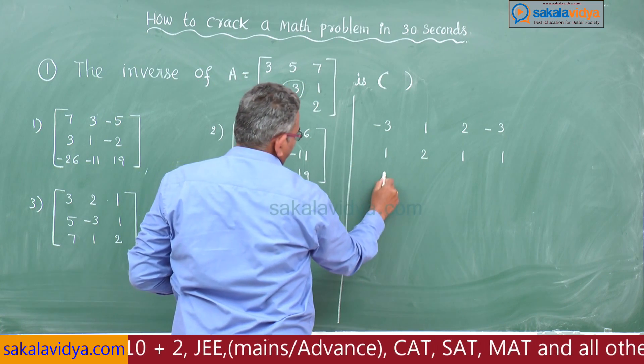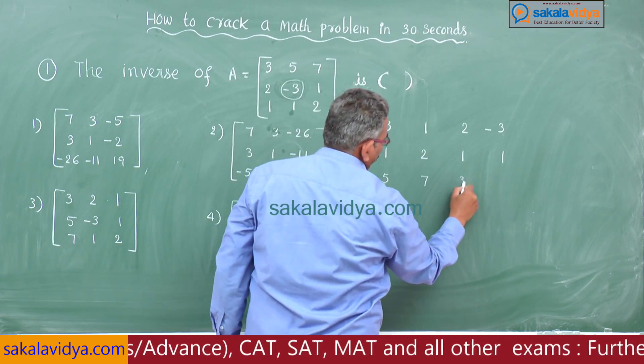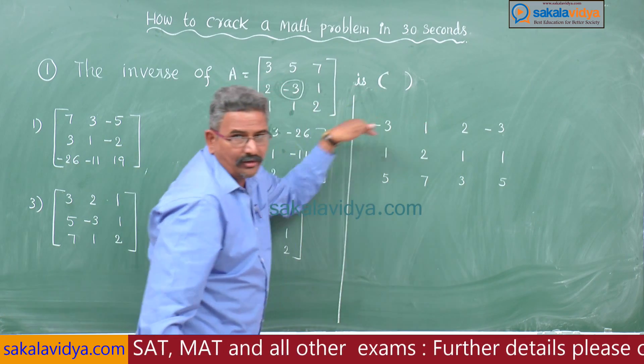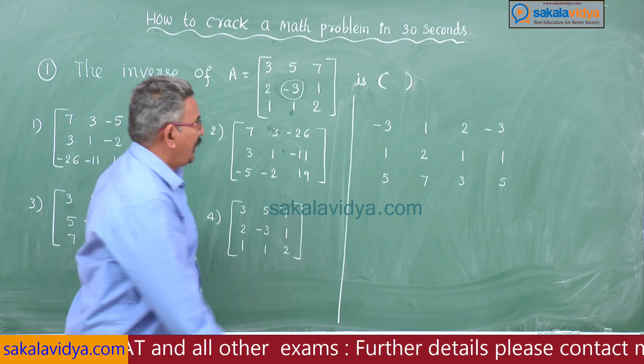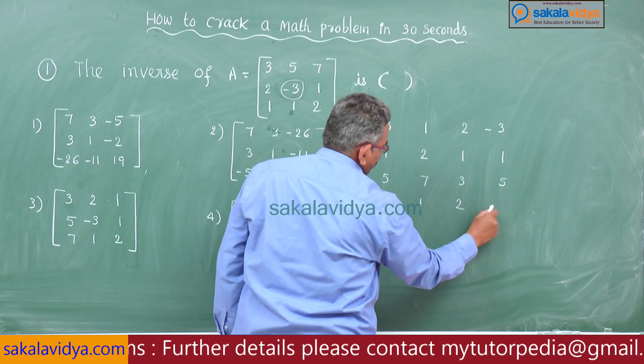Next top, similarly take middle element, you write down like this: 5, 7, 3, 5. Next again same top row as it is, now down: -3, 1, 2, -3.